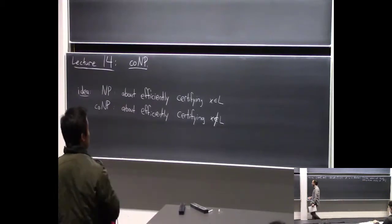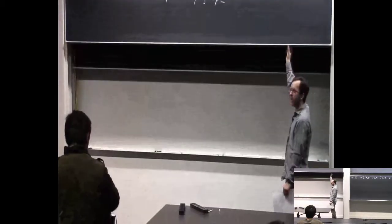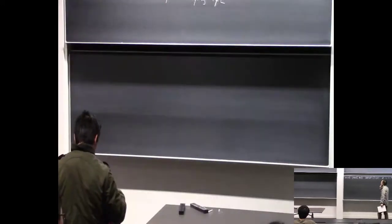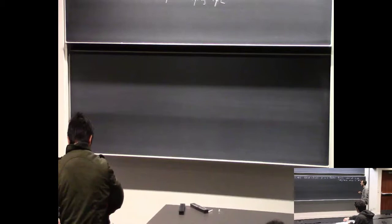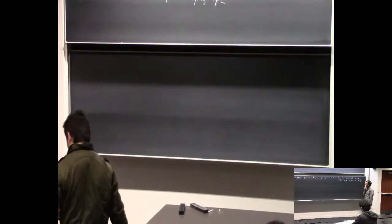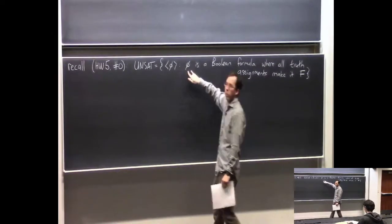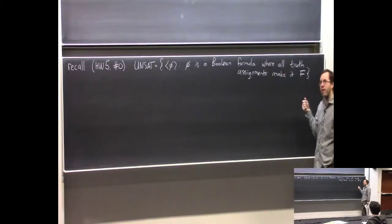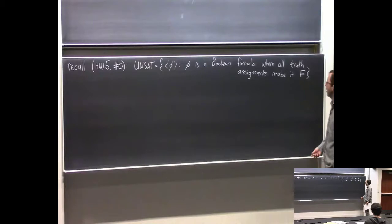At first, it doesn't really seem like a sensible distinction. What's really the difference between being in a language and not being in a language? It's just inverting yes or no. But it'll lead us to some very interesting questions. I want to start by recalling a problem from homework 5, number 0—the language UNSAT. This is the set of all strings that are representations of Boolean formulas where every truth assignment makes them false, i.e., formulas that are not satisfiable.